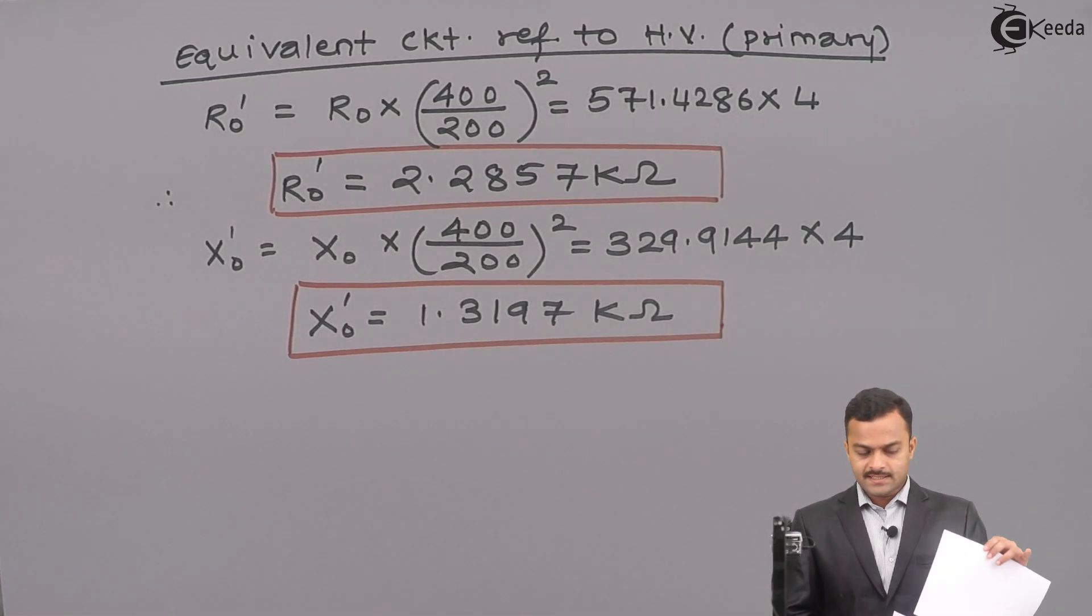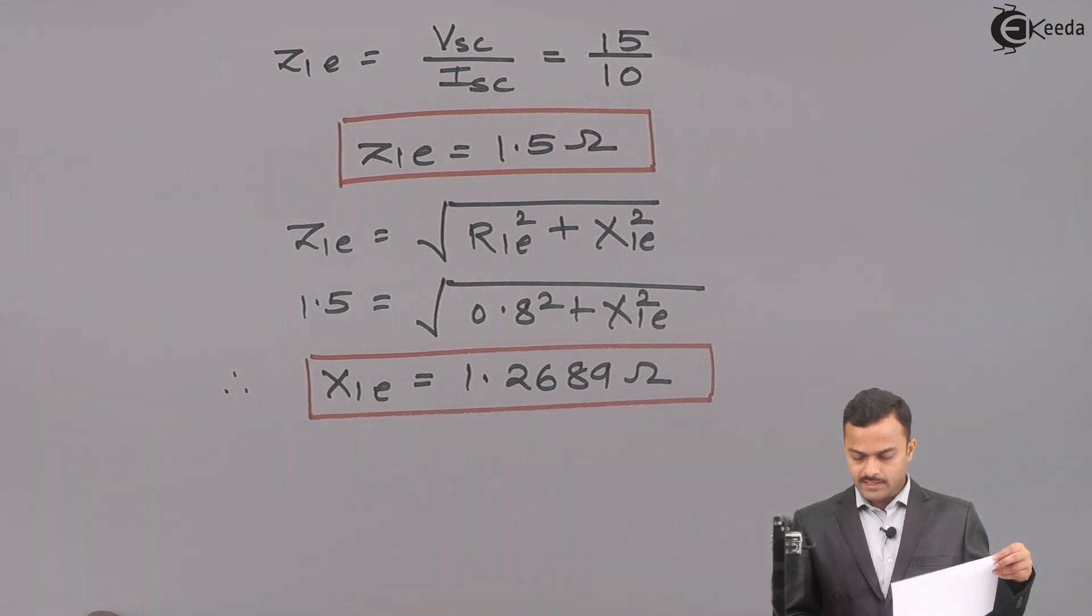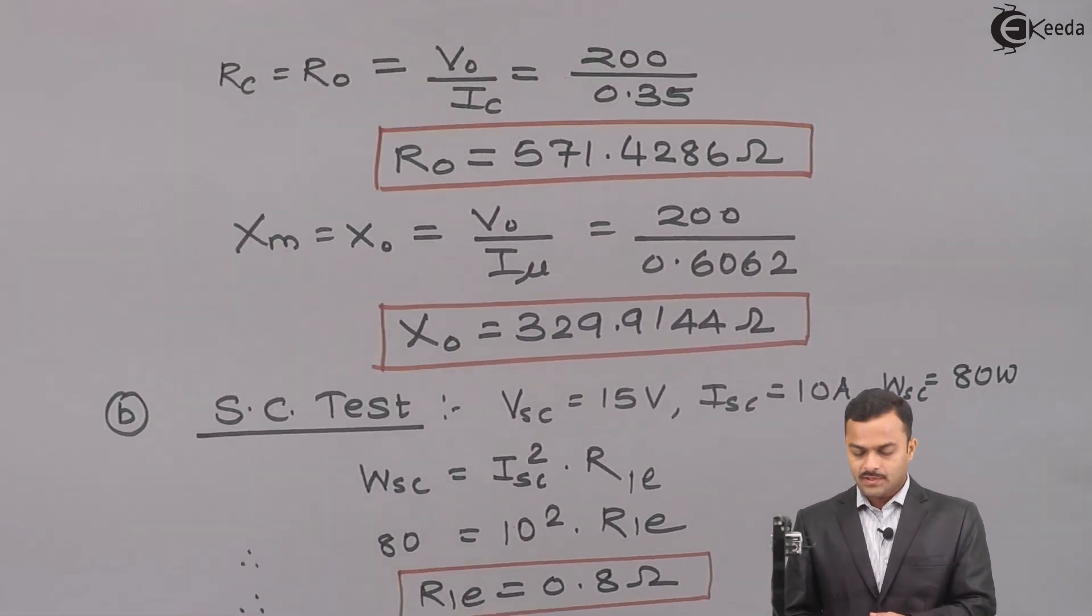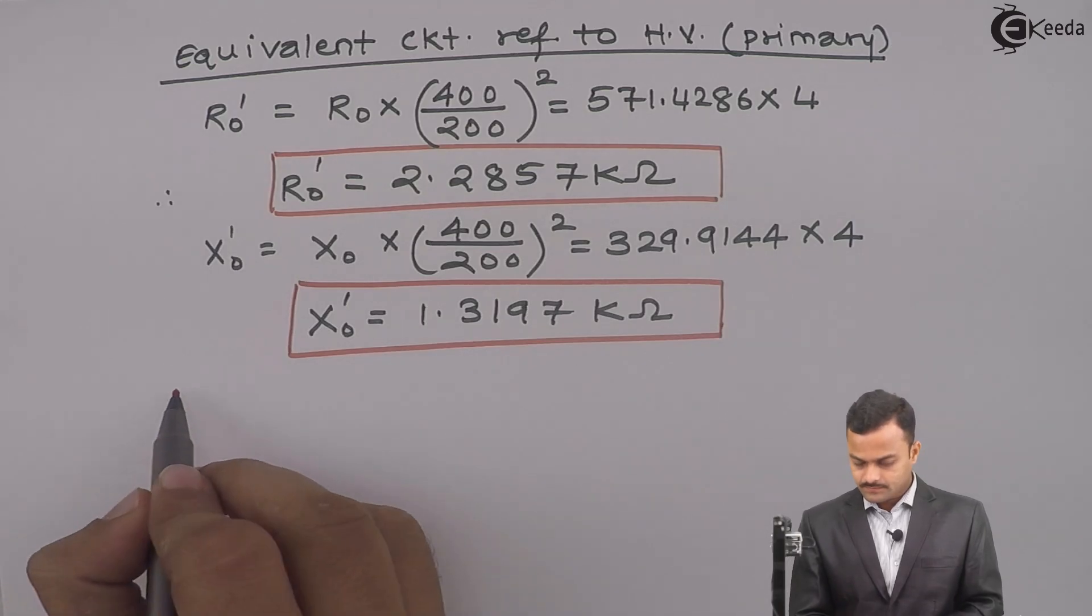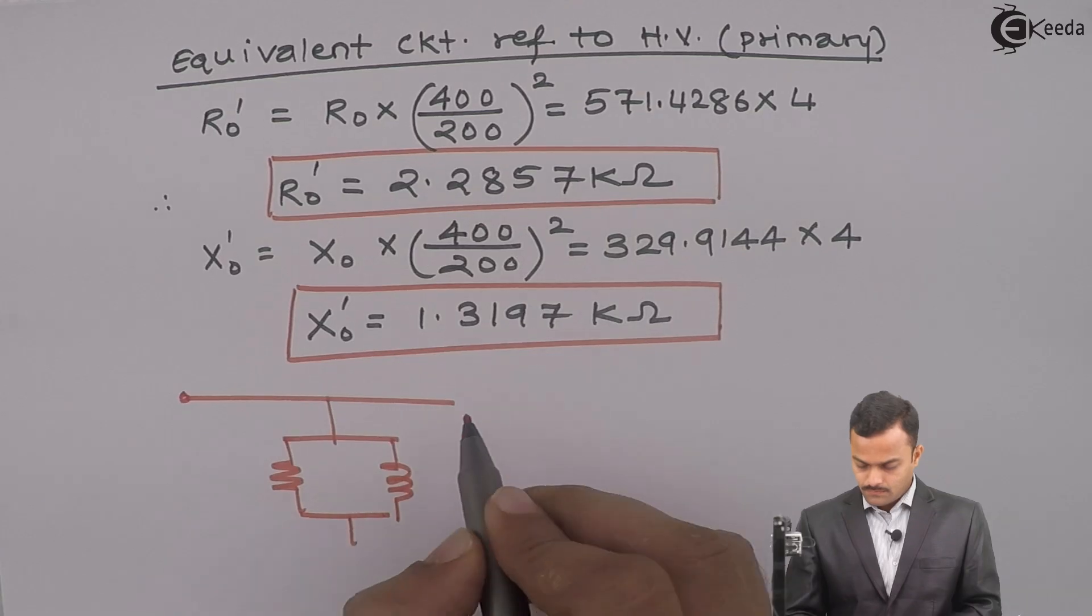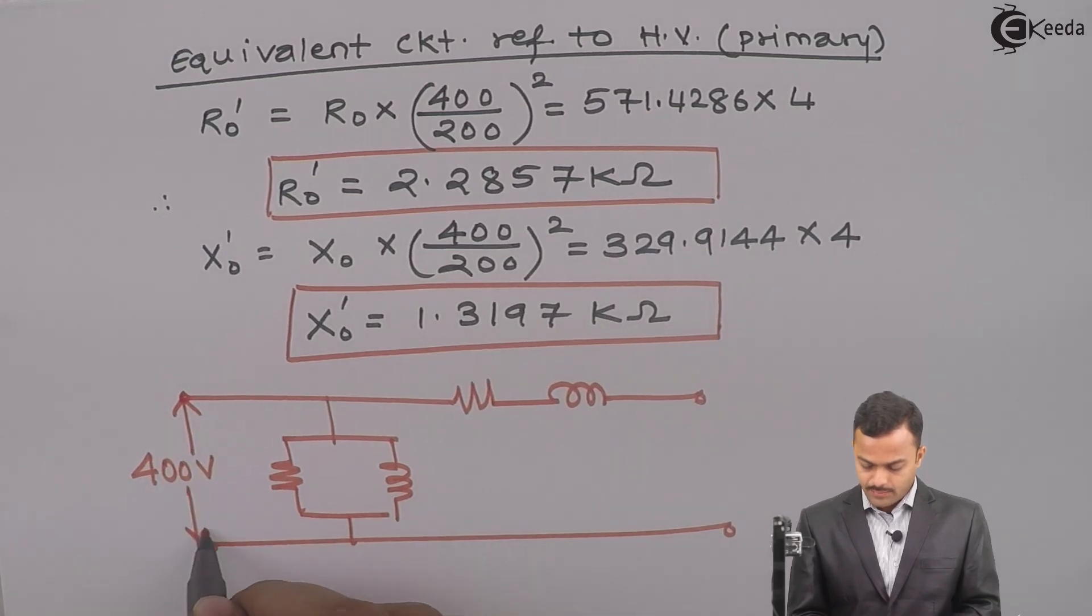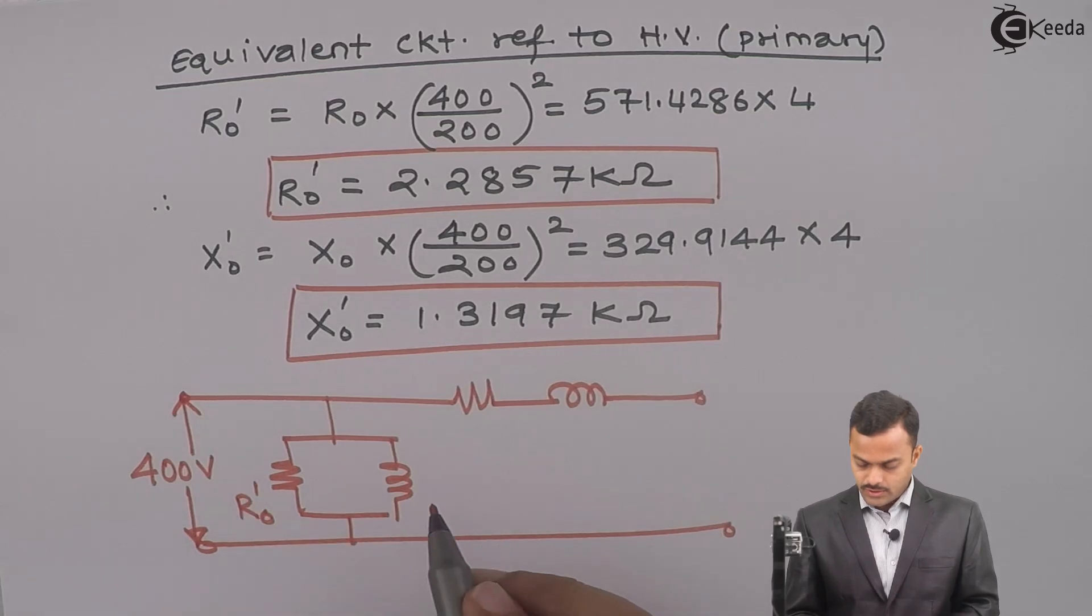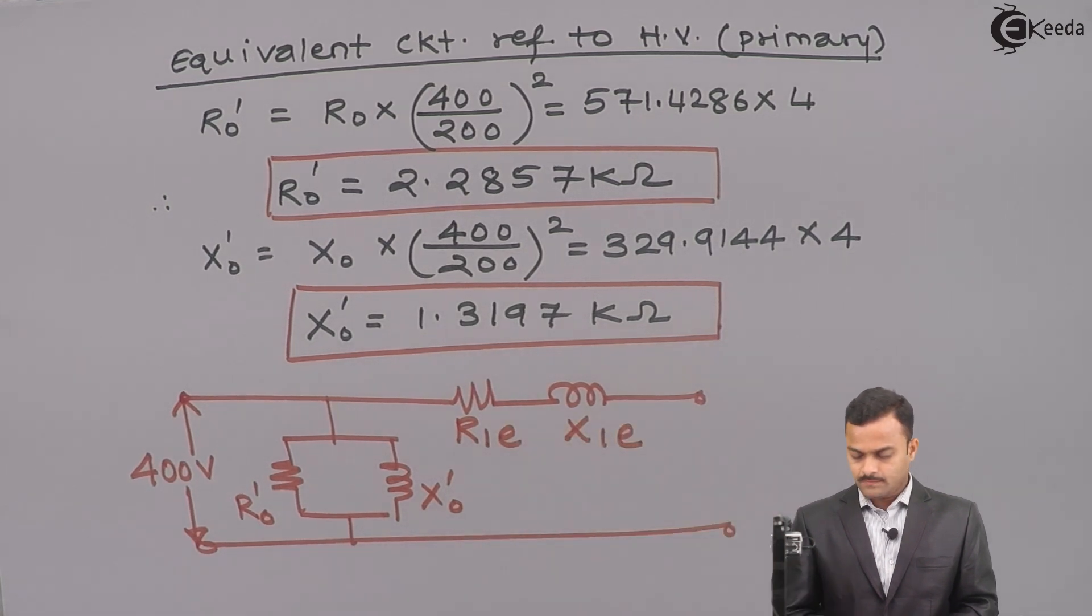As I said earlier, the test that you have performed on HV side, those parameters will remain same. That means X1E, R1E, Z1E will remain same. So how the circuit will look like? Equivalent circuit referred to HV side will be like this. High voltage side, so high voltage is getting applied and here the parameter you will get R0 dash, X0 dash and this will be as it is R1E, X1E. So this is the equivalent circuit diagram referred to primary side or high voltage side and that we obtained from the OC-SC test. Thank you.